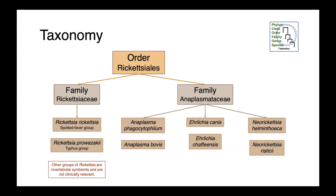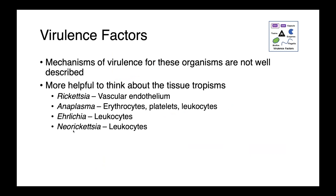For Rickettsia species, it's important to know that these organisms are invertebrate symbionts — there are many of them, most of which are not clinically relevant. Rickettsia rickettsii is our archetypal spotted fever group rickettsia, while Rickettsia prowazekii is an archetypal member of the typhus group, along with Rickettsia typhi. The virulence factors of these organisms are not well described, and it's more useful to think about tissue tropisms: Rickettsia species tend to infect the vascular epithelium, Anaplasma is found on erythrocytes, platelets, and leukocytes, while Ehrlichia and Neorickettsia tend to be associated with leukocytes.